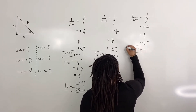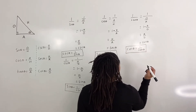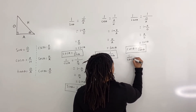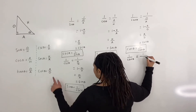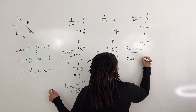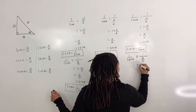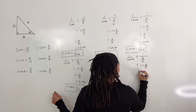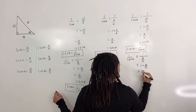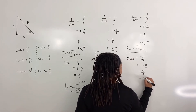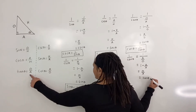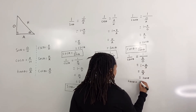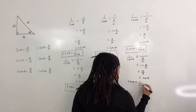Similarly, 1 over cotangent of theta is equal to 1 over adjacent over opposite, which is equal to 1 times opposite over adjacent, which is equal to opposite over adjacent, which is equal to tangent of theta. Thus tangent of theta is equal to 1 over cotangent of theta.